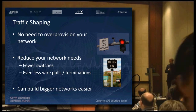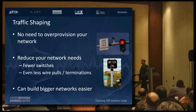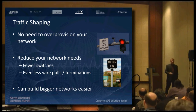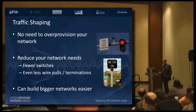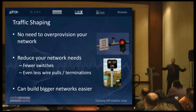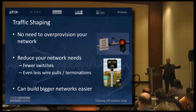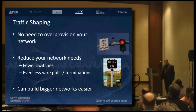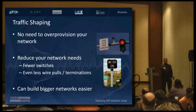Once you can smooth out traffic, you've reduced your network needs — you need fewer switches and you'll have to pull even fewer wires. Traffic shaping makes a huge difference. Because this happens on every single bridge throughout the system, you can build bigger networks without being concerned. Because at each hop, without AVB, you had to be really careful about how you over-provisioned your network and what was being funneled down into each one of those wires.